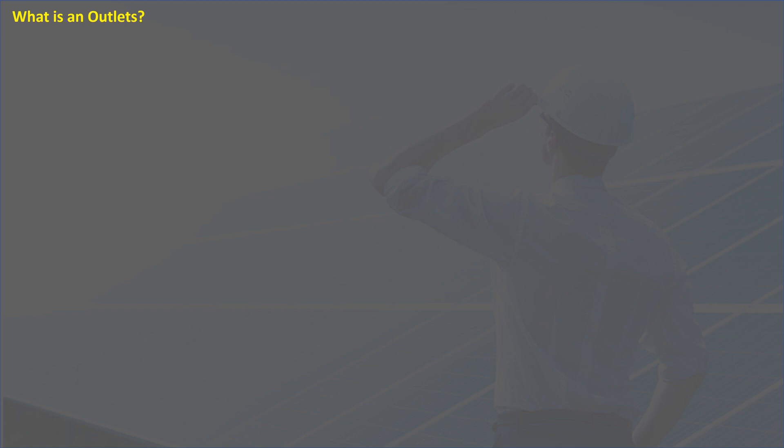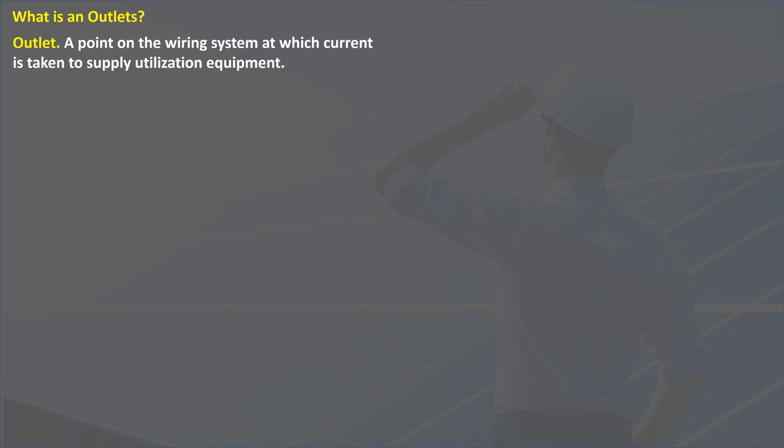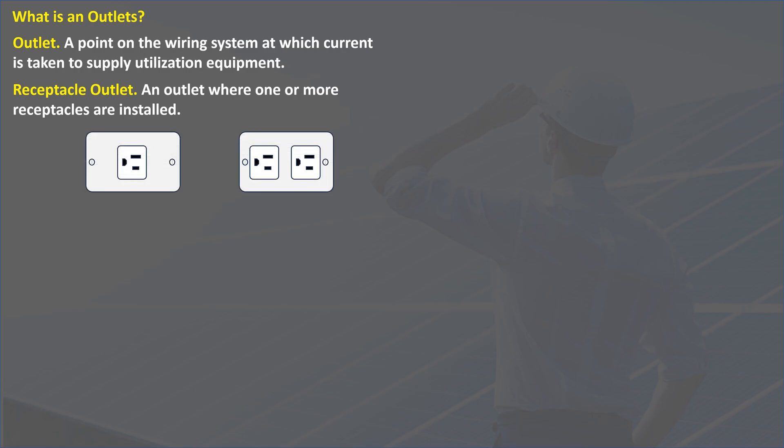First, what is an outlet? As defined in the electrical code, an outlet is a point on the wiring system at which current is taken to supply utilization equipment. The definition of a receptacle outlet is an outlet where one or more receptacles are installed. Photos show typical receptacle outlets. A receptacle is always an outlet, but an outlet is not only a receptacle.